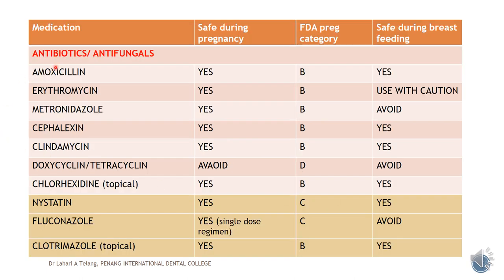Let's look at antibiotics and antifungals during pregnancy and their FDA categories. Amoxicillin is one of the safest antibiotics — category B — even during breastfeeding. Erythromycin is also the best alternative for amoxicillin and one of the safest, but during breastfeeding it should be used with caution because it can potentially cross the barrier and be excreted in breast milk.